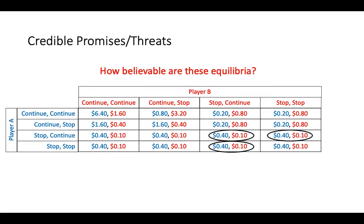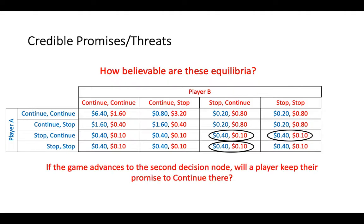Now that we've found these equilibria, we should ask ourselves a question: how believable are these equilibria in which one player says that if the game progresses to their second decision node, they will choose to continue? Or, asked another way, if the game advances to the second node, will a player really keep their promise to continue at that point? The answer is probably not, because it would not be rational for a player to do so.